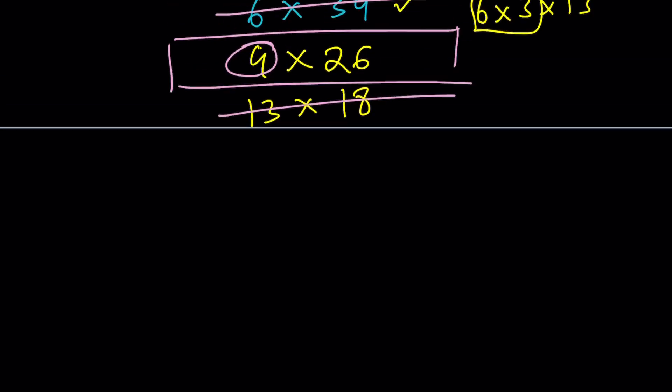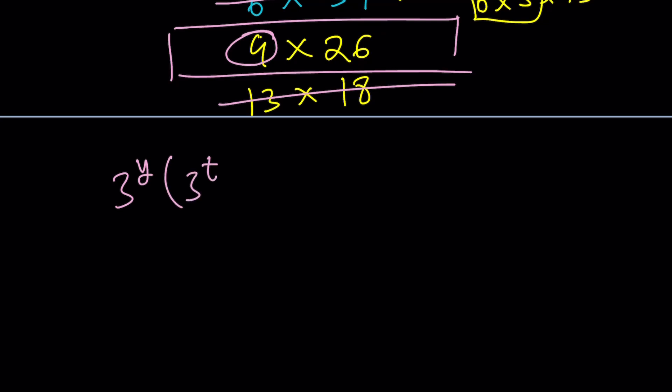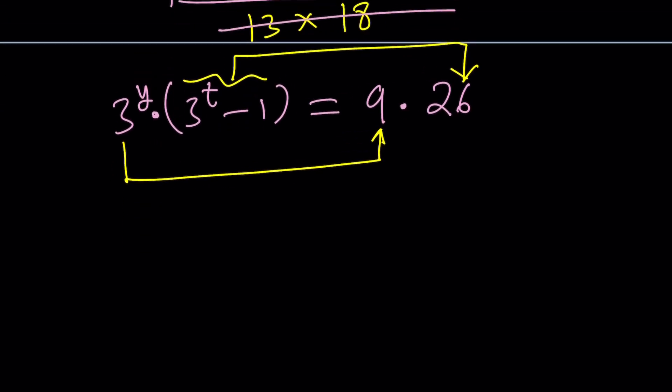So, now we got the following. Let's recap what we have. 3 to the y times 3 to the t minus 1 equals 9 times 26. We now know that 3 to the y must be 9, and 3 to the t minus 1 must be 26. From one equation to two equations. That's the power of number theory, especially Diophantine equations. That's why Diophantine equations are awesome. That's why Diophantus is awesome. The father of all Diophantine equations.